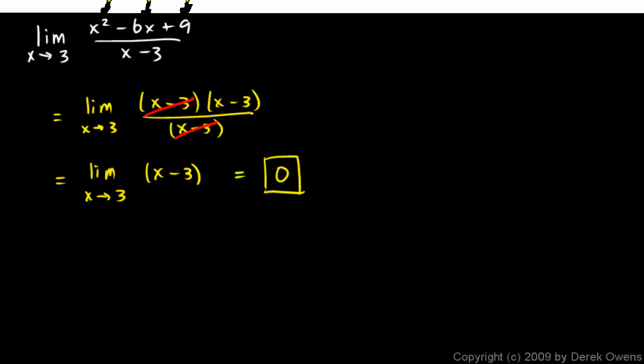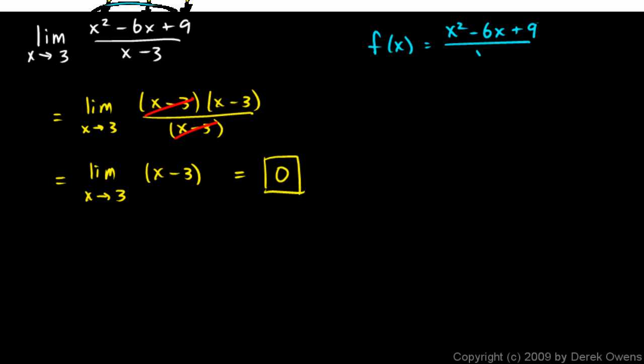And then we just take note of the fact that our original expression simplified to this. So the graph of this function, if we were to say this was a function f(x) equals x² - 6x + 9 over x - 3...